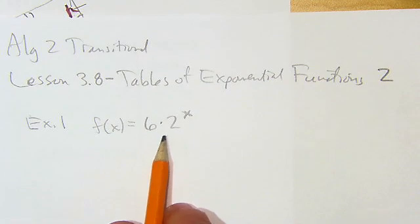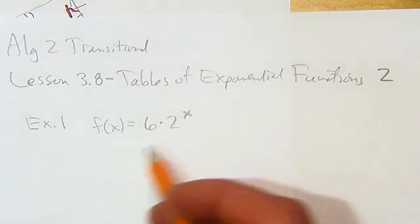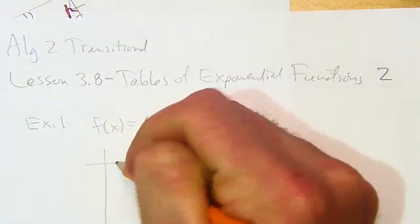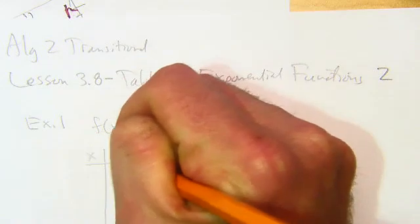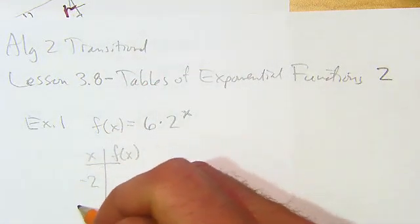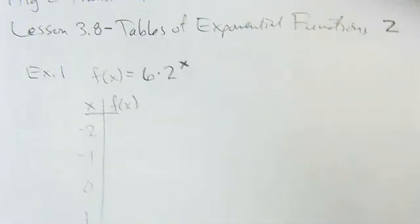So you'll be given an exponential function like this. Remember, exponential means x is up in the power, and it will basically say make a table and make a graph. I'll make my table this way today. And it will say from negative 2 to 2 for your table.